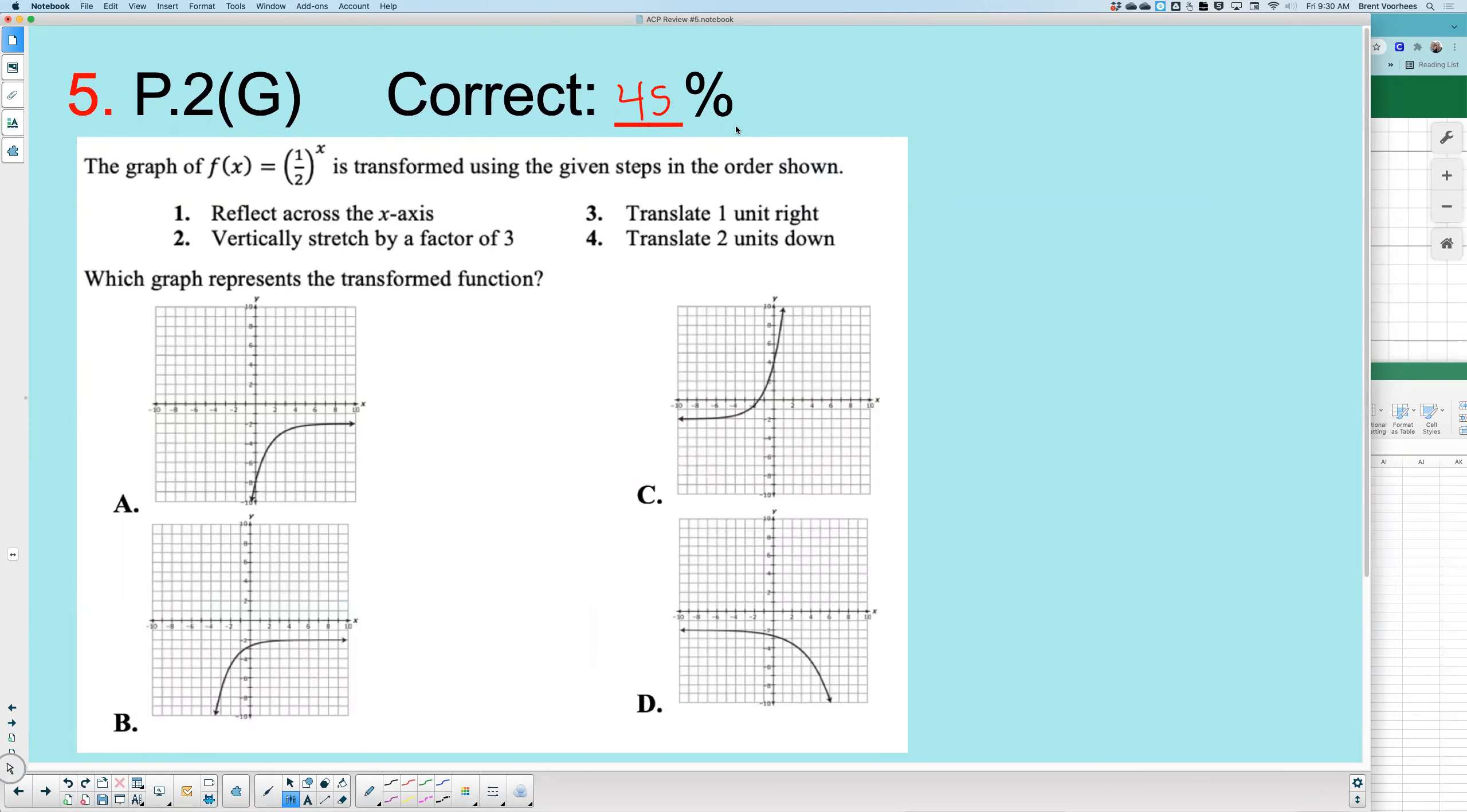It says the graph of f(x) equals 1/2 to the power of x is transformed using given steps in order shown. And there's four different steps. Which graph represents the transformed function? So I'm going to start, or y'all tell me, how did you start this one?